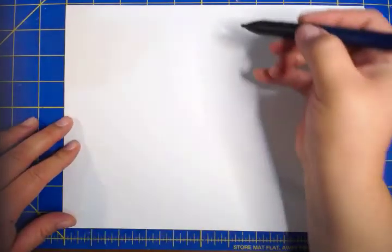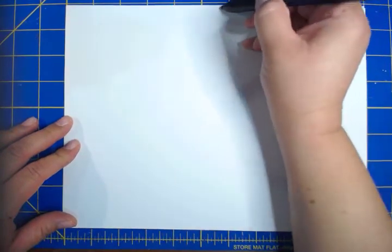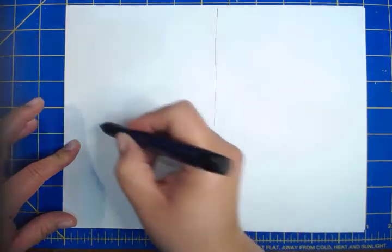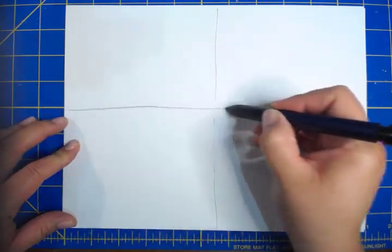So today I will be drawing a shark. I'm going to start by drawing a vertical line down the middle of my paper and a horizontal line going in the opposite direction.